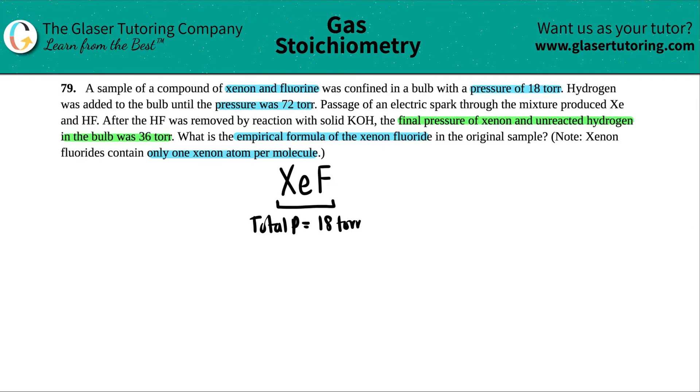Now, they did give us a little hint here. We want to find the empirical formula of the xenon fluoride in the original sample, but they did tell us there's only one xenon per molecule. So we know what this number is going to be. We know that there has to be a one for the xenon. So the question is, what is this number for the fluorine? Is it a 2? Is it a 3? Is it a 4? We need to find this out.